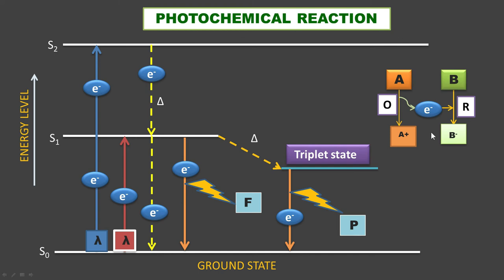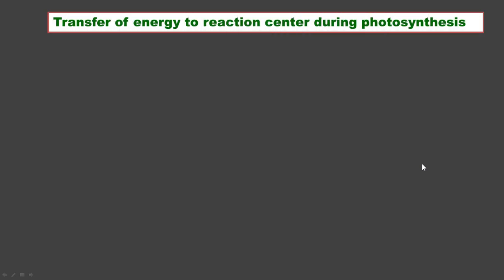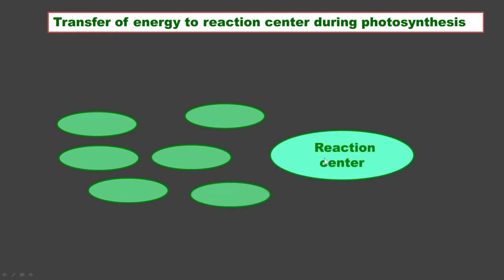Now, how is energy transferred to our reaction center during photosynthesis? These are the different light harvesting complexes, and this is the reaction center. Light harvesting complex includes pigments, proteins, carotenoids, chlorophyll molecules, so many things. How energy is transferred—this is an important slide.